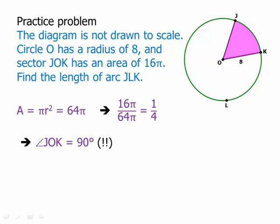Now we want the length of arc JLK. This is tricky — that's not the little arc that runs along the sector. That's the big wraparound arc that starts at J, goes counterclockwise around through L, and arrives at K. So that would be three-quarters of the circle — three-quarters of the circumference. The circumference is 16π, so three-quarters of that is 12π. That is the length of that arc.